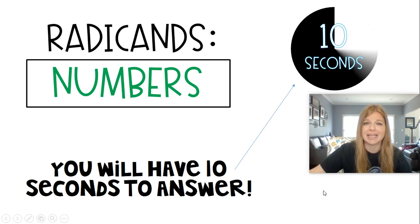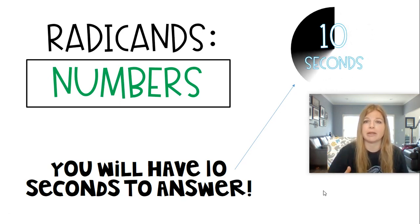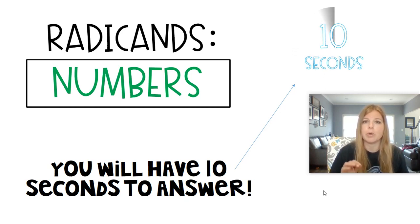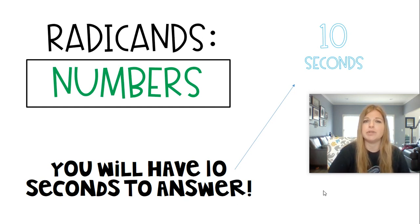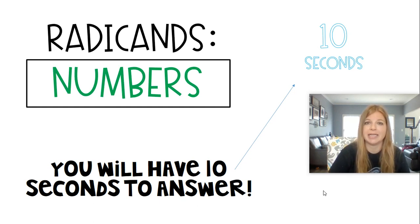I'm going to be giving you 10 seconds to simplify a radical with just numbers only for right now. The whole process is always: figure out the biggest perfect square that divides into that radicand, then break apart that radicand into the perfect square and the other factor, and simplify it. For example, the square root of 36 is just 6. But for the square root of 18, the biggest perfect square that goes into 18 is 9. So it's Radical 9 times Radical 2, which becomes 3 Radical 2.